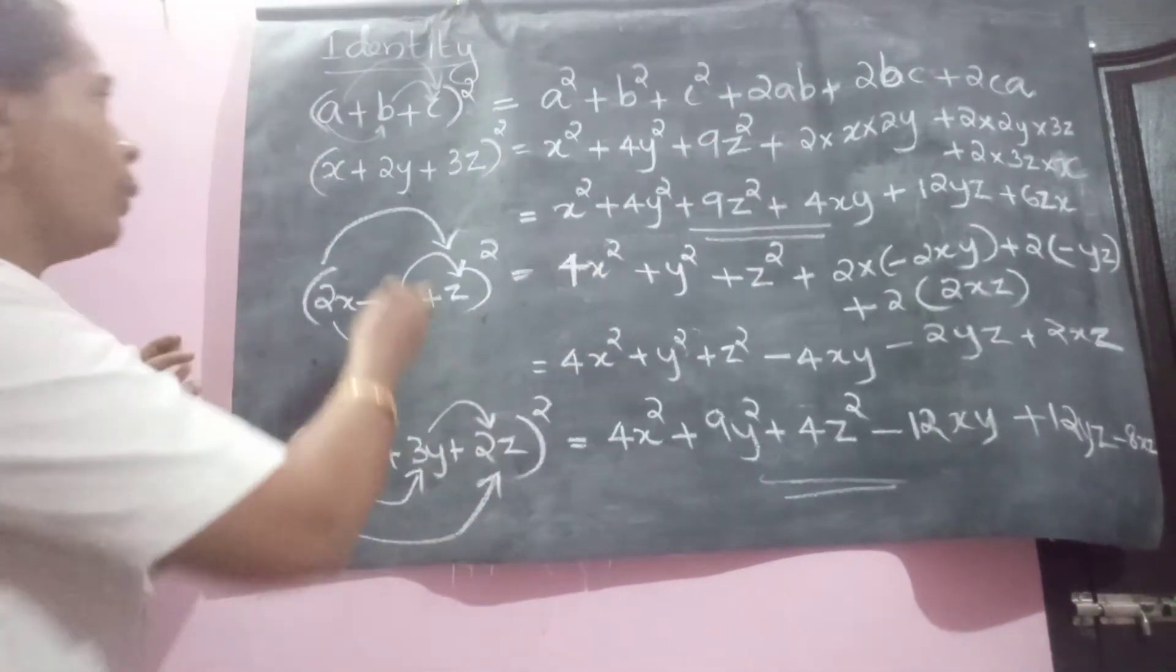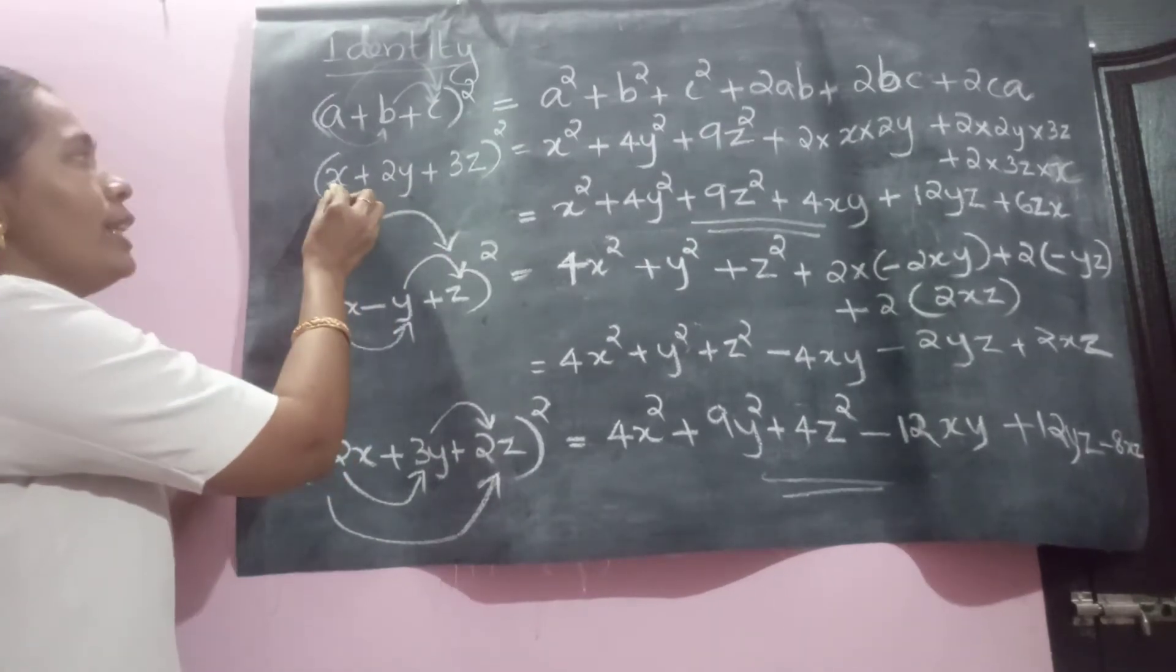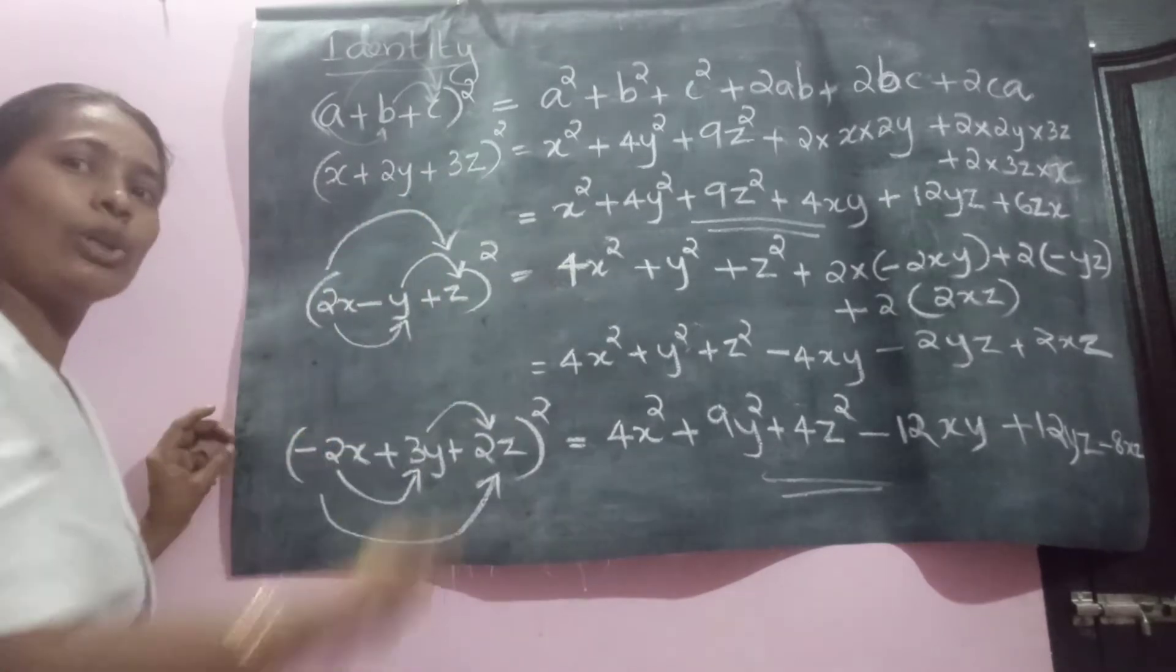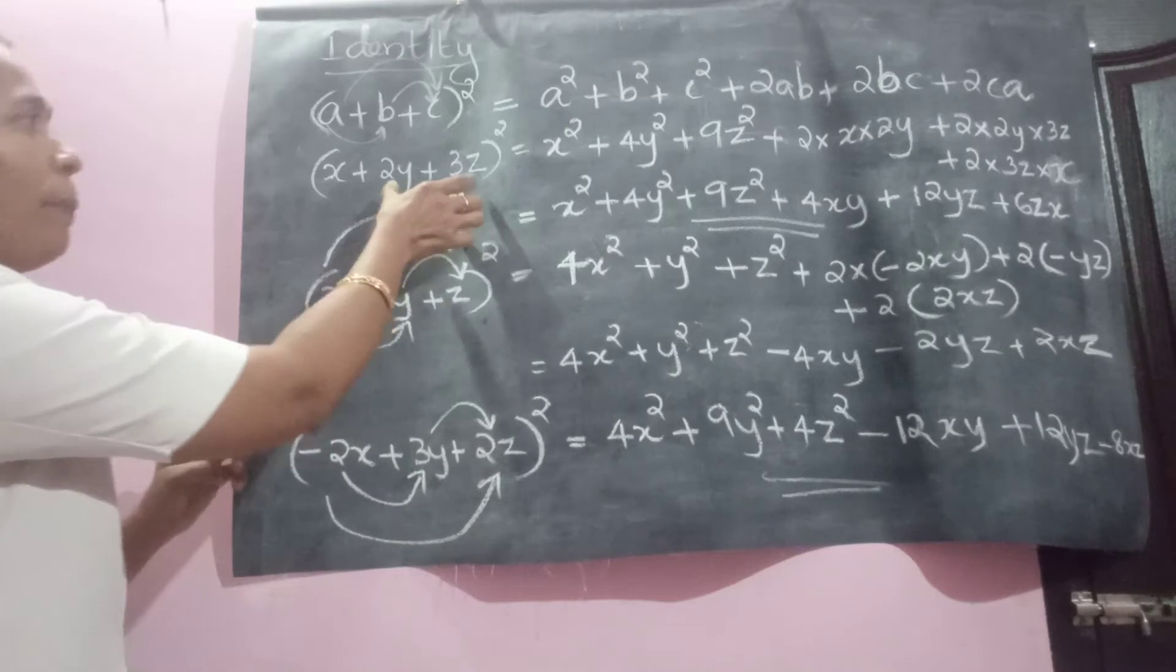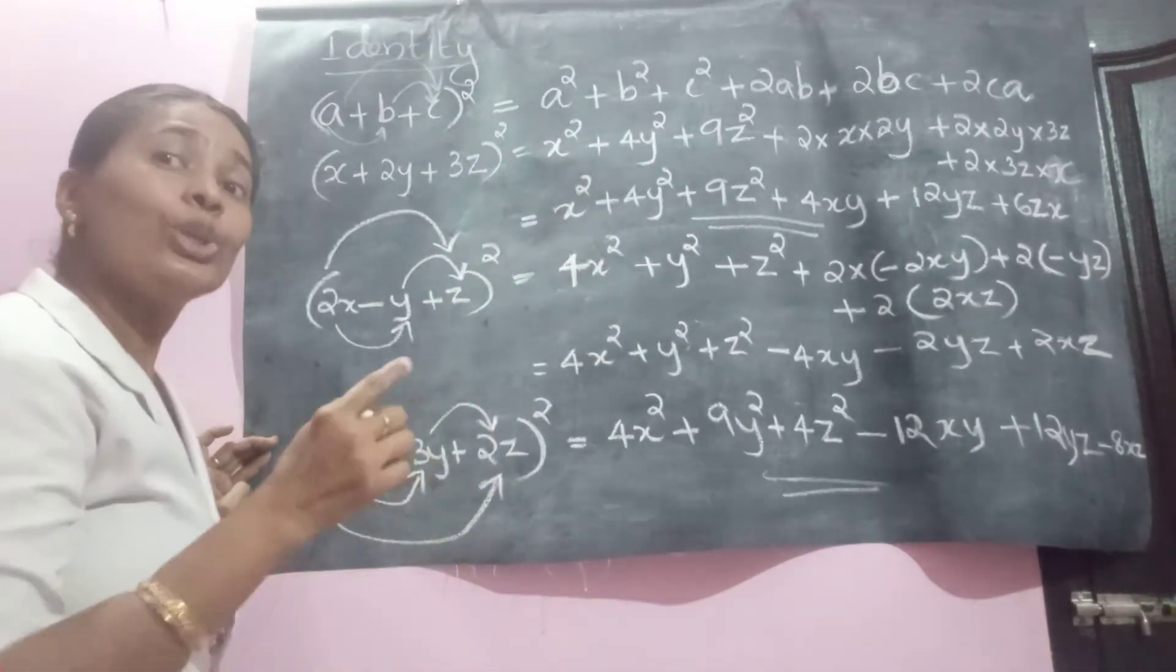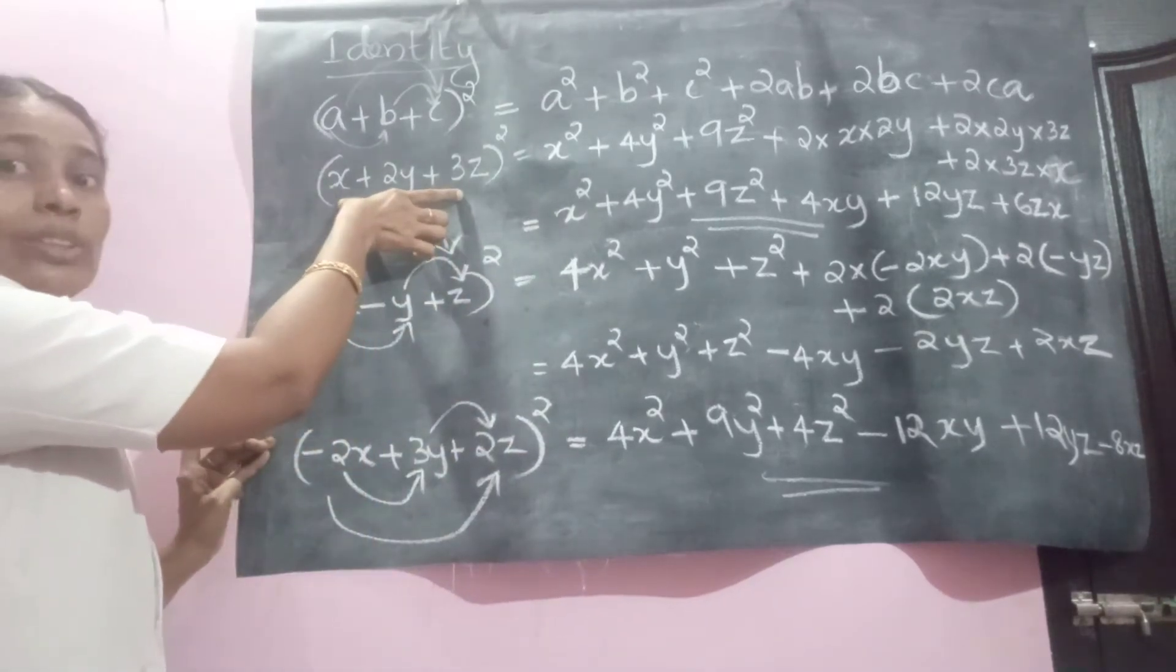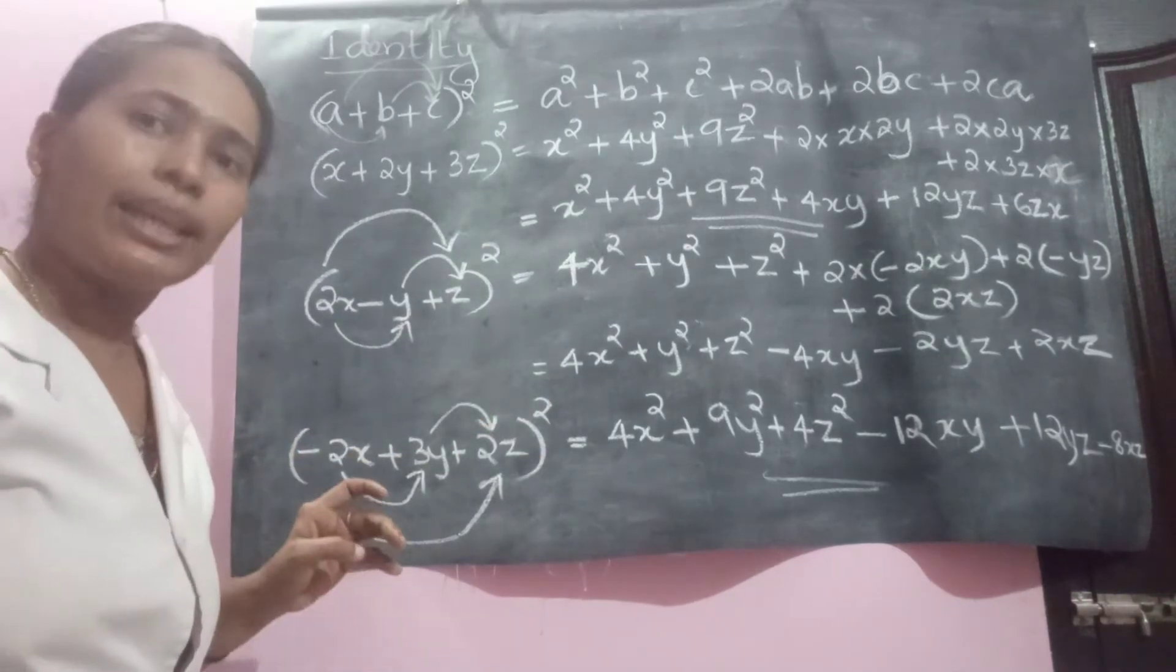The teacher told you twice the product of AB, isn't it? So this term is 2XY and twice. So how much will come? 4XY. Similarly, product of these two is 6YZ and it's double. So 12YZ. Similarly, first and last, 3XZ, it's double. So 6XZ.